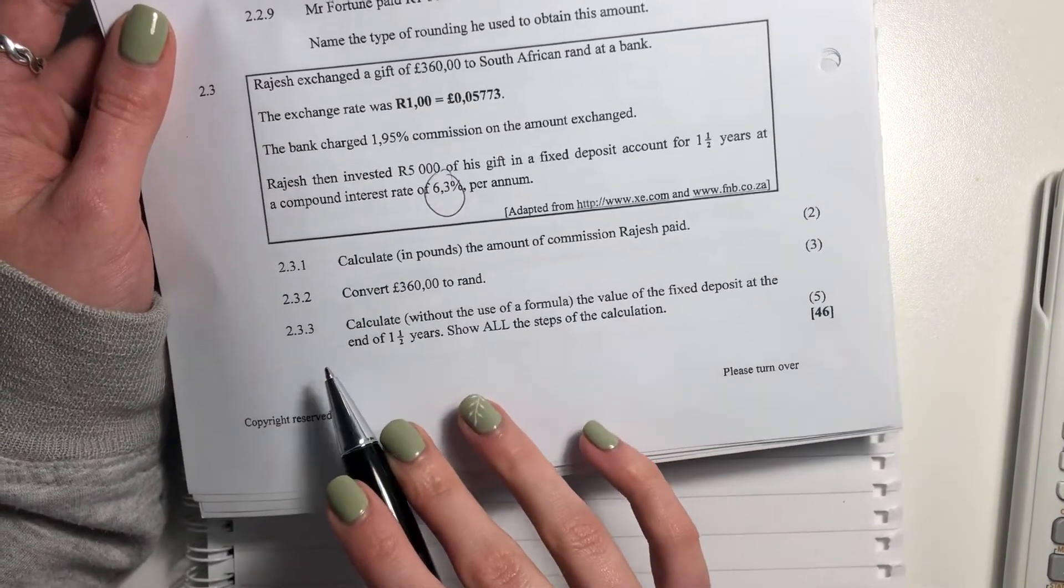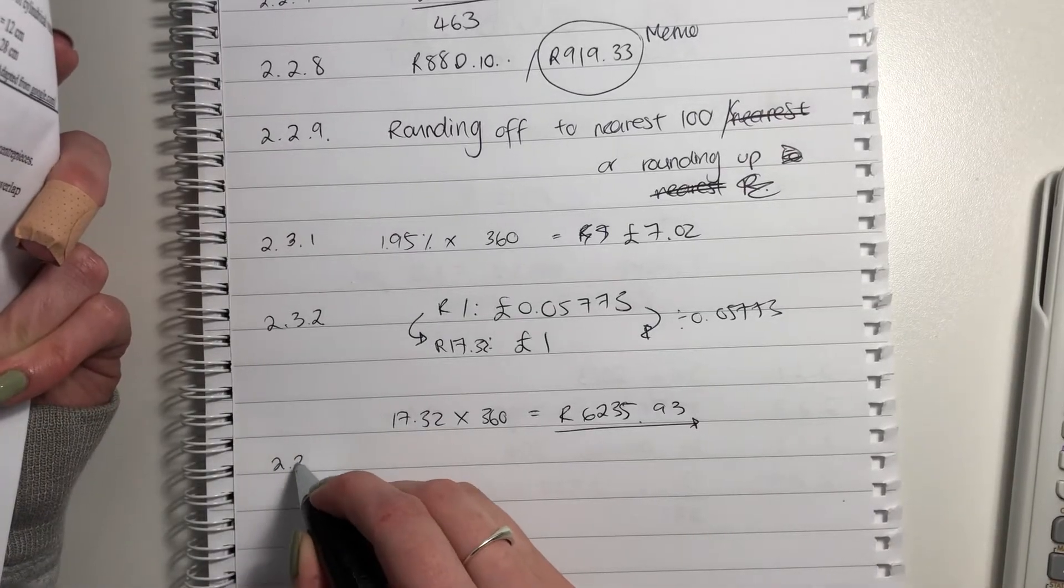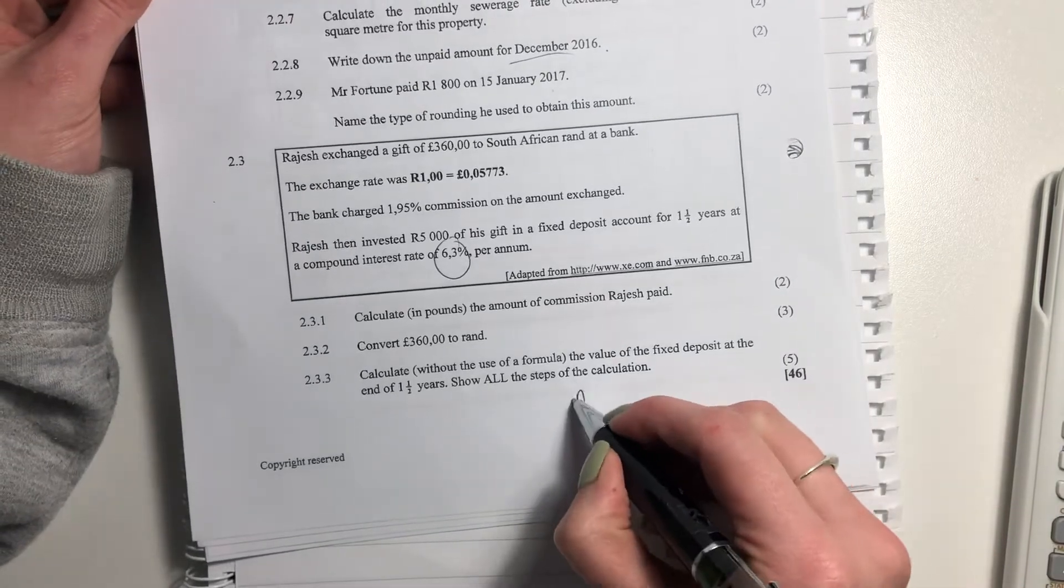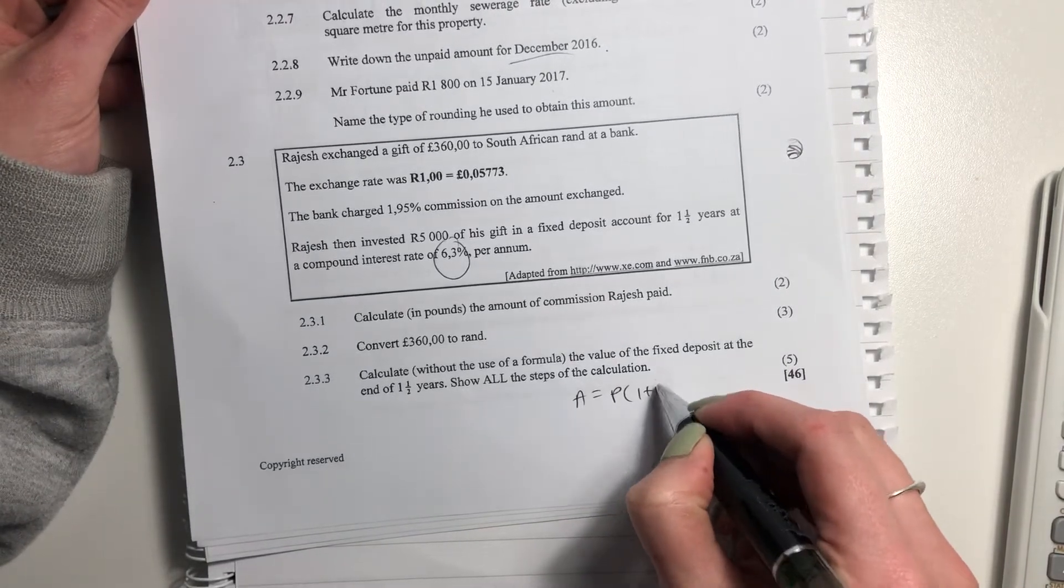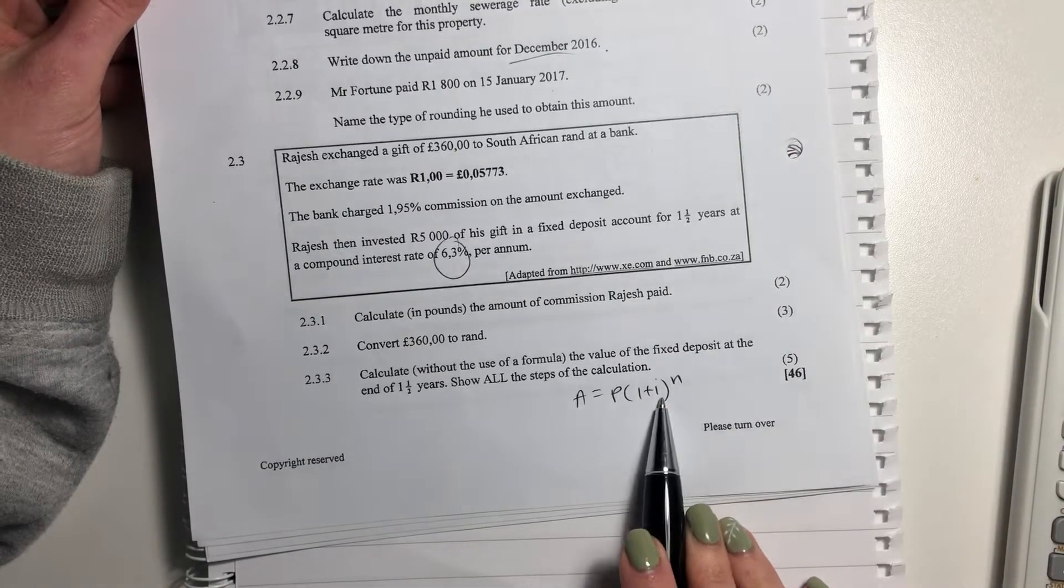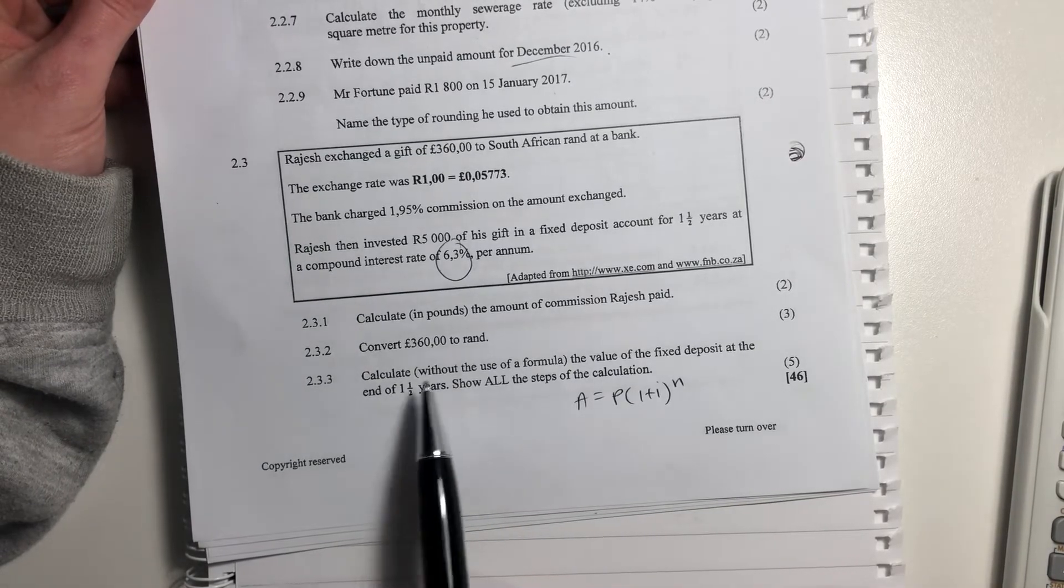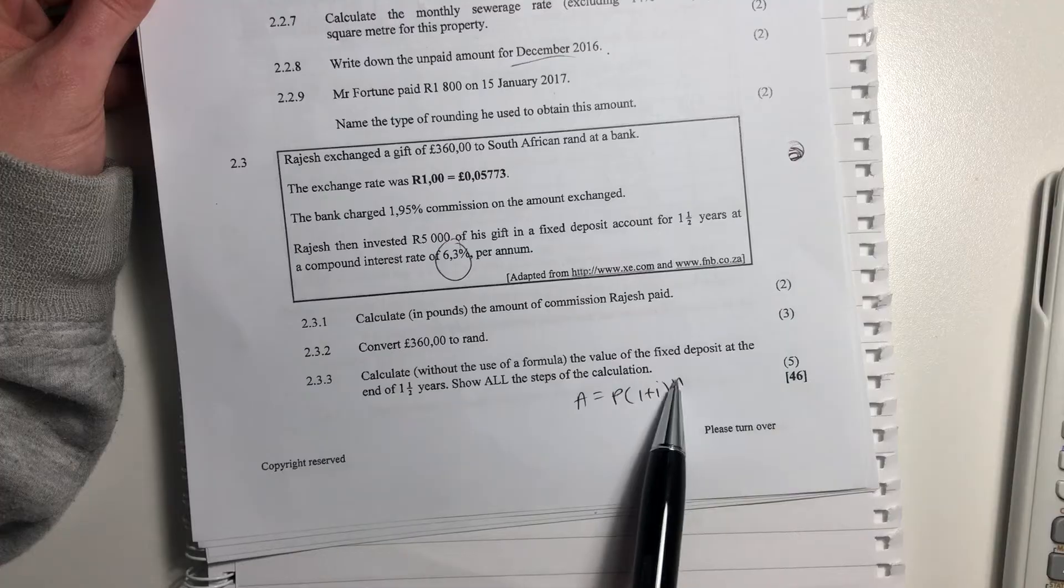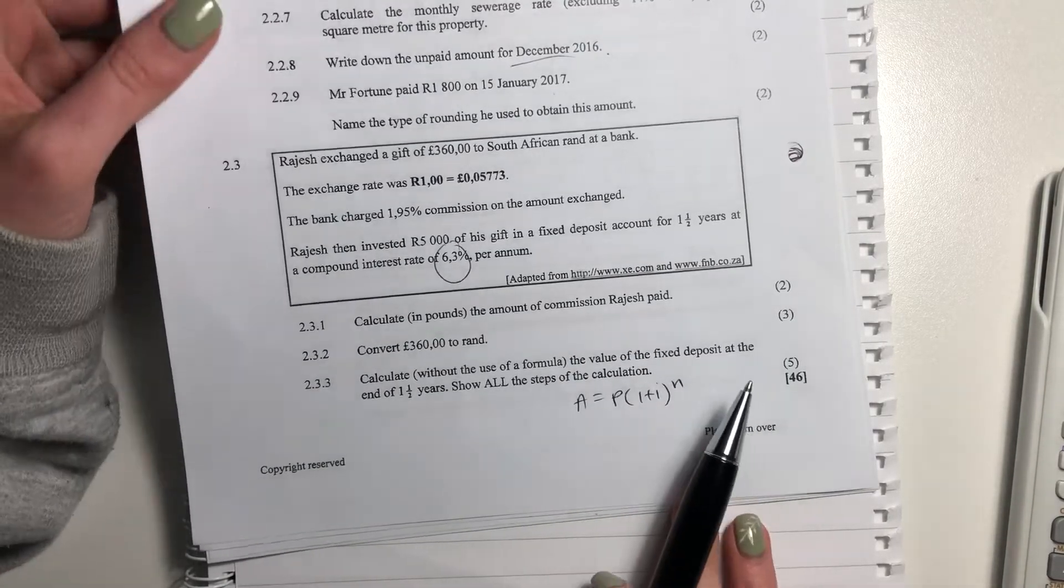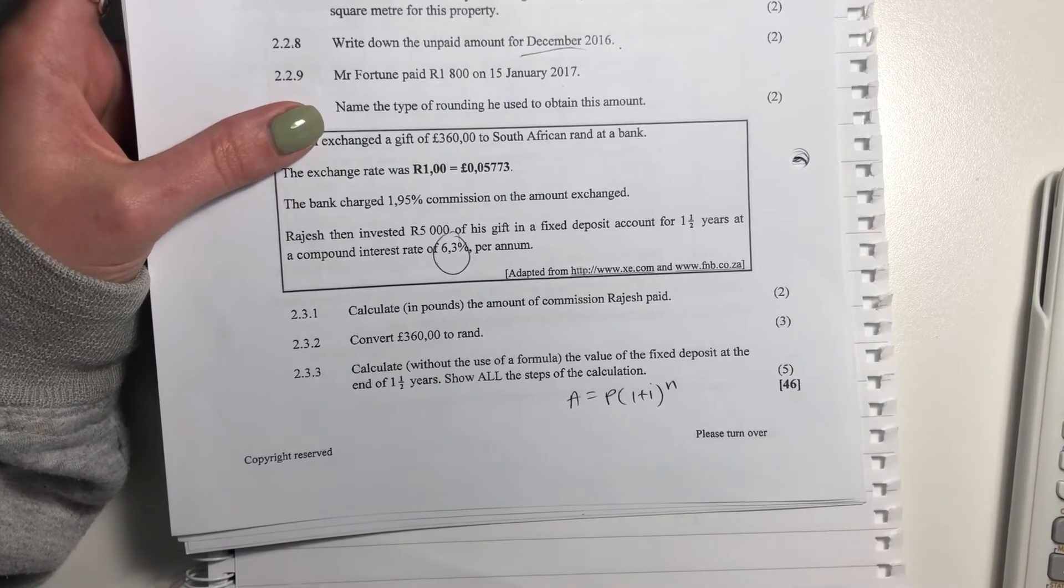Let's do our last question now, 2.3.3. So here, what's interesting is they expect you to know how to calculate compound interest. So if you've forgotten, this is the formula. That's accumulated amount, so how much you get at the end, how much you put in originally, interest rates, and period of time, generally in years. But here it says calculate without the use of the formula. So we can't use that. The value of the fixed deposit at the end of one and a half years, show all the steps in your calculation. So remember the whole concept of compound interest is interest on interest.